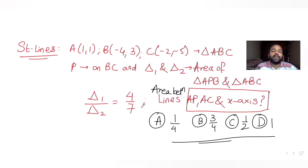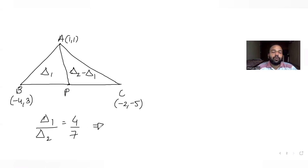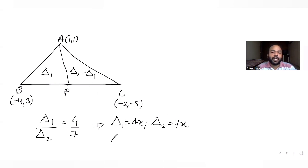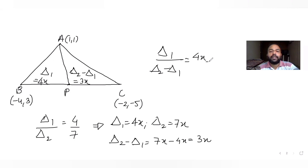We have been given the ratio Δ1 upon Δ2 as 4 upon 7. Taking the common multiple as x, Δ1 becomes 4x and Δ2 becomes 7x. So the area of the other smaller triangle APC becomes Δ2 minus Δ1, which is 7x minus 4x, that is 3x.